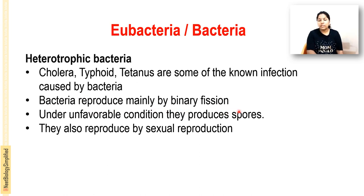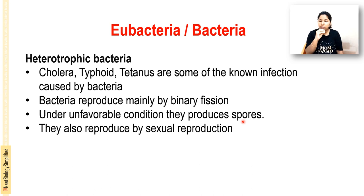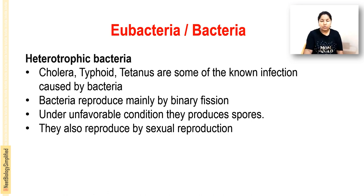Bacteria reproduce mainly by binary fission - the mother cell divides into two daughter cells, each of which again divides into two new cells, doubling the number of cells. When conditions are unfavorable, they produce spores. In some cases sexual reproduction is also possible in bacteria.